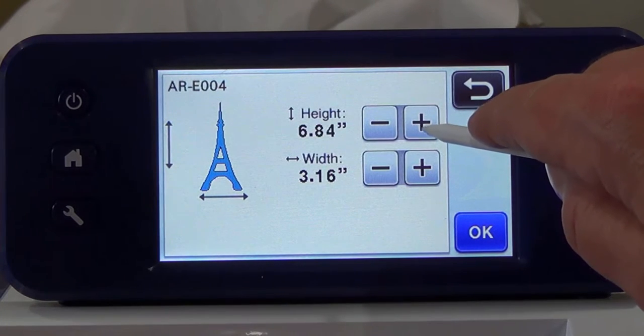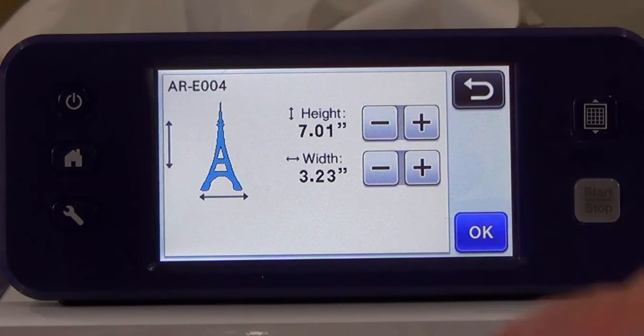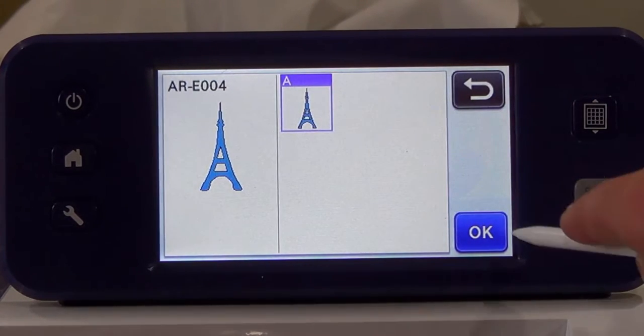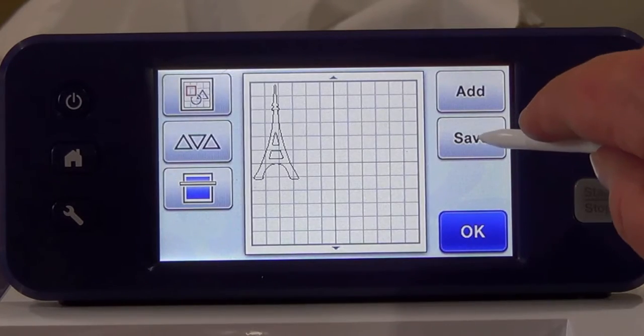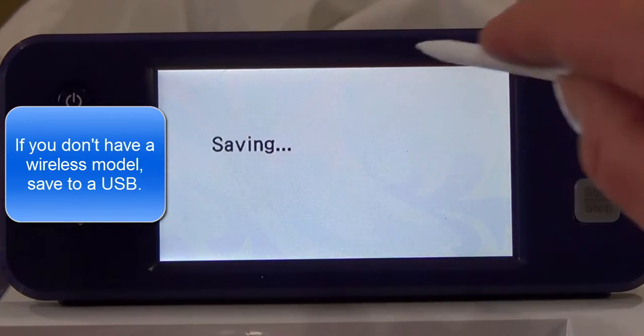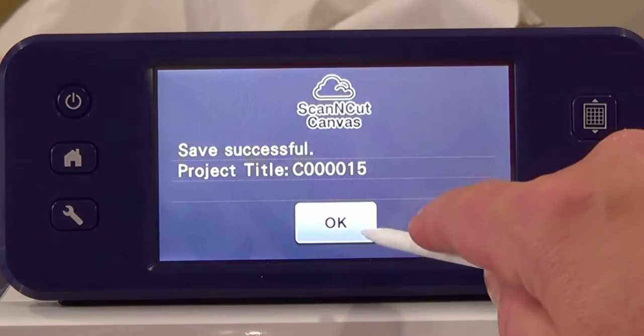Resize the pattern to meet your needs. Press OK. Press OK again and press Set. Press Save. Choose Scan and Cut Canvas. Take note of the project title and press OK.